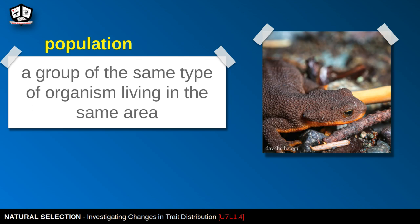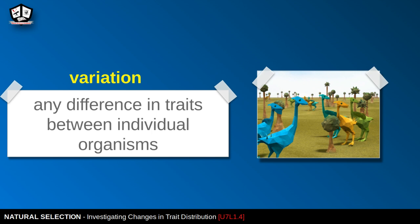Let's make sure we understand what a population is — a group of the same type of organism living in the same area. Here is a rough-skinned newt; a group of rough-skinned newts in an Oregon State Park is a population. Variation, reviewing this keyword, is any difference in traits between individual organisms. The ostrilopes from last lesson — green, yellow, and blue — show differences in traits, demonstrating variation in that population.